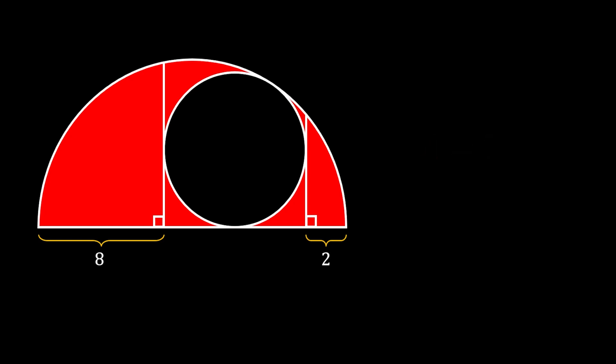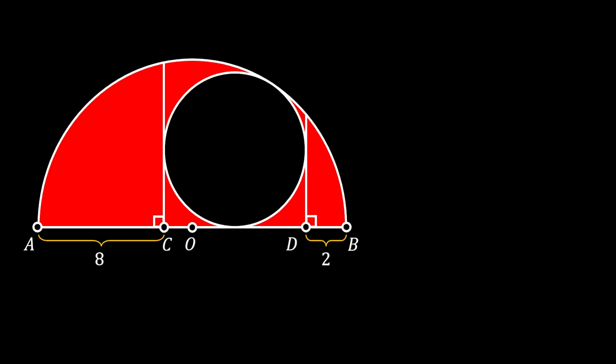First, we're going to mark the center of our half circle as O. Then we'll mark the endpoints of its diameter as A and B, and we'll mark the intersection points between the perpendicular lines and the diameter of the half circle as C and D.